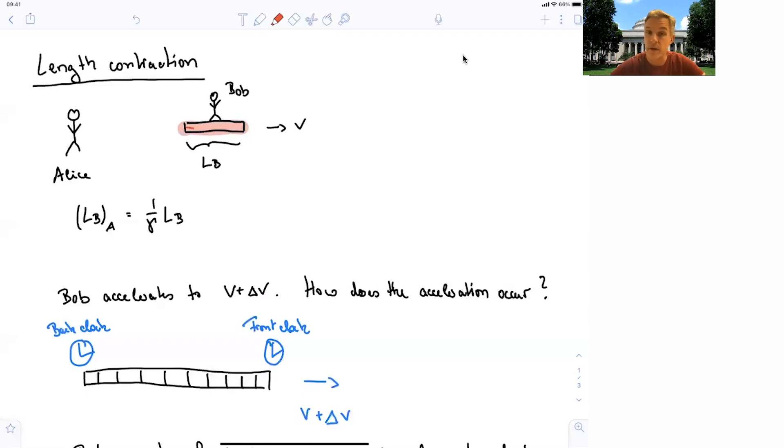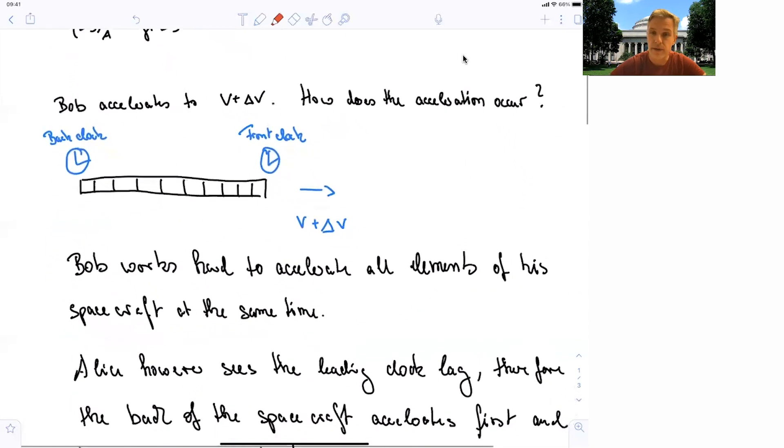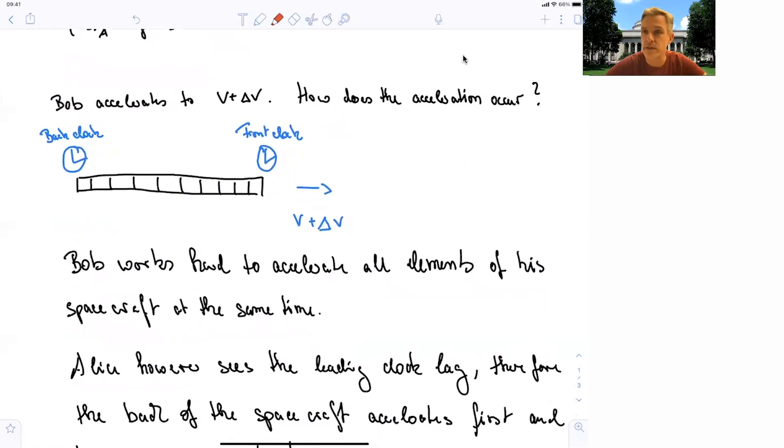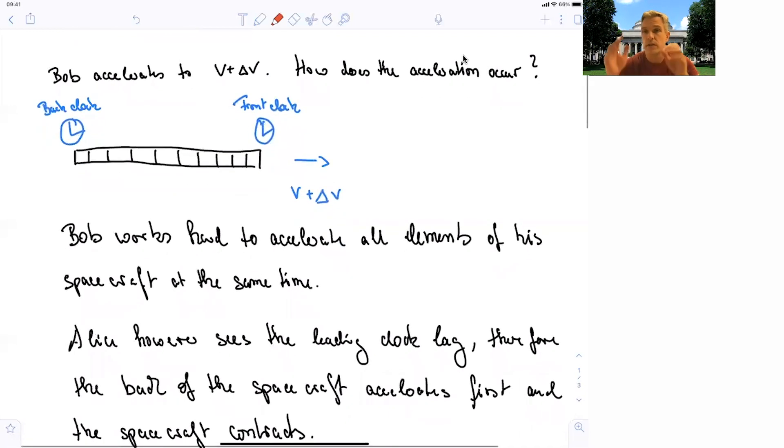So if now Alice observes the same situation, we find that she looks at the spacecraft. And because the leading clock in a spacecraft, in Bob's spacecraft, lags, she observes that the spacecraft's back is being accelerated first. And because it's accelerated first, she observes that the spacecraft shrinks just a little bit because of the additional velocity.